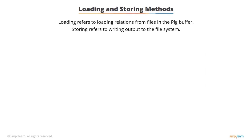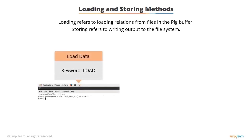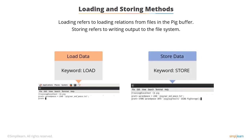Now let's look at how to load and store data in the PIG engine using the command console. Loading refers to loading relations from files in the PIG buffer, done using the keyword load followed by the name of the variable for which data is to be loaded. A series of transformation statements then processes the data. Storing refers to writing output to the file system, done using the keyword store followed by the name of the variable whose data is to be stored, along with the location of storage. You can use the keyword dump to display the output on the screen.